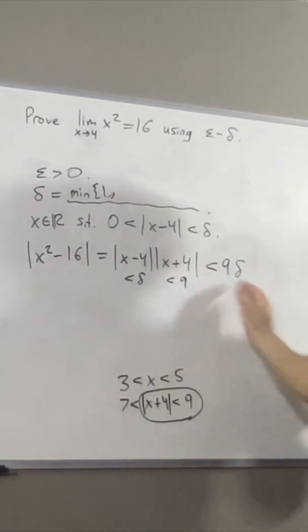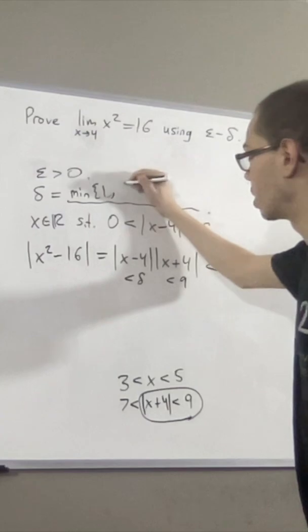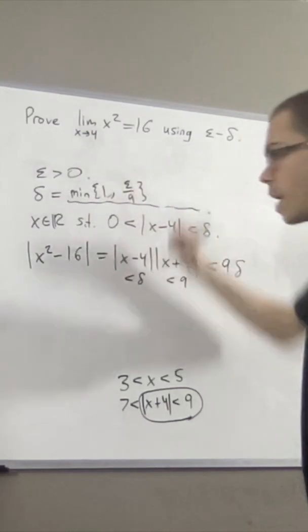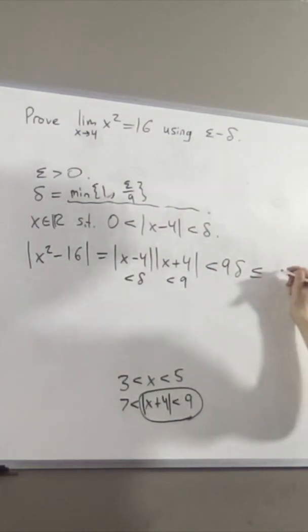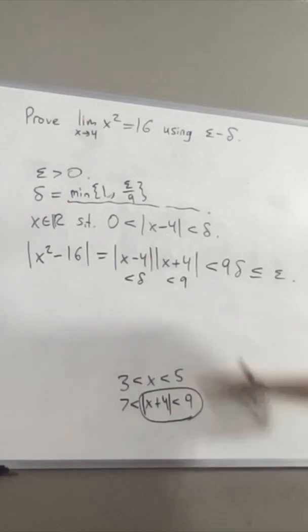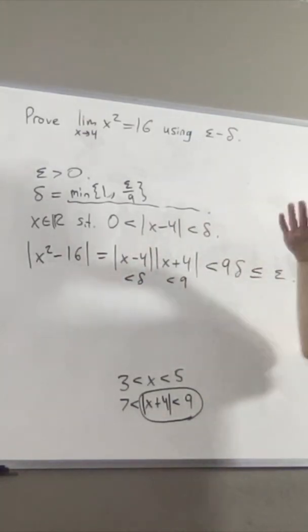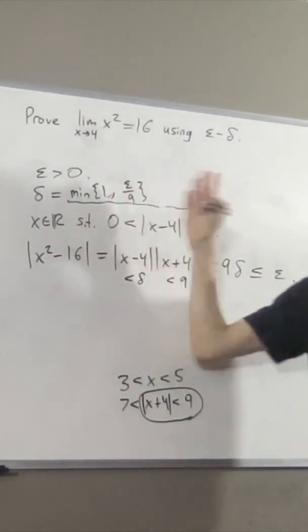So now we're at this, but then to make this less than epsilon, we just have to define delta so that delta is less than or equal to epsilon over 9, because then 9 delta is less than or equal to epsilon. So we have made this guy less than epsilon, and so this completes our epsilon delta proof.